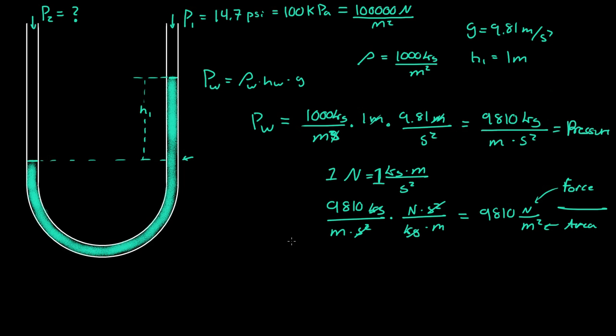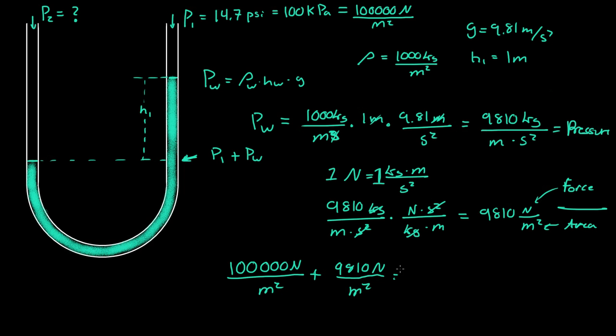So what is the pressure at the bottom of the manometer? It is equal to the pressure of the atmosphere (P1) plus the water pressure (Pw). For our case: 100,000 newtons per meter squared plus 9,810 newtons per meter squared gives us 109,810 newtons per meter squared.